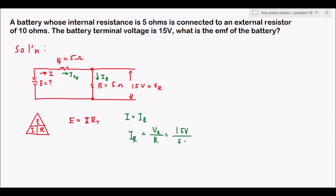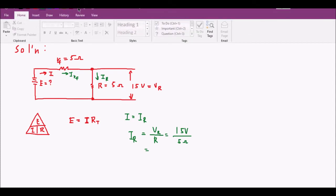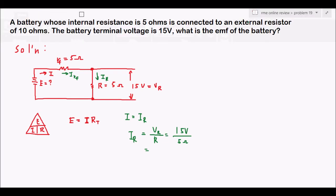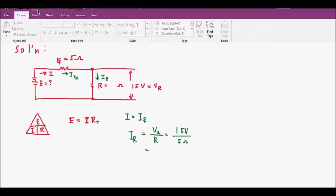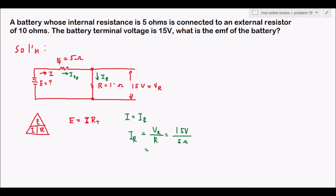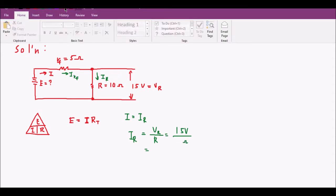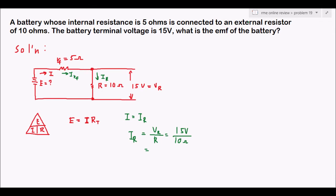The external resistor is 10 ohms — I made a mistake earlier writing 5 ohms, so let me correct that. So I equals 15 volts divided by 10 ohms, which gives us 1.5 amperes. This is our current.